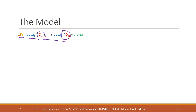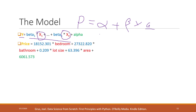In our previous example, we saw: price equals alpha plus beta times area — that is a simple linear regression model. If we use a multiple linear regression model, it will be: price equals beta 1 times number of bedrooms, plus beta 2 times number of bathrooms, plus beta 3 times lot size, plus beta 4 times area, plus alpha. Each variable will have its own unique beta, and we will also have an intercept alpha.